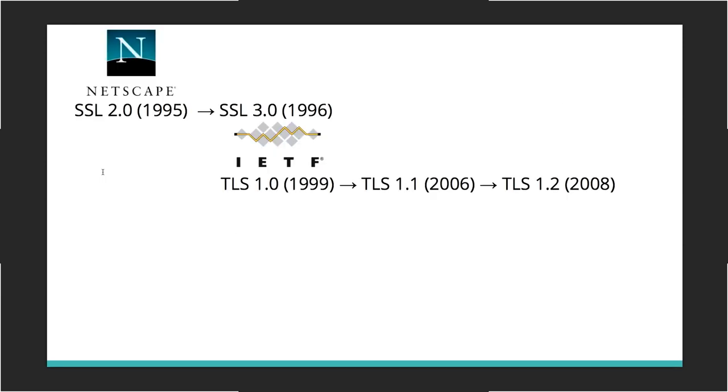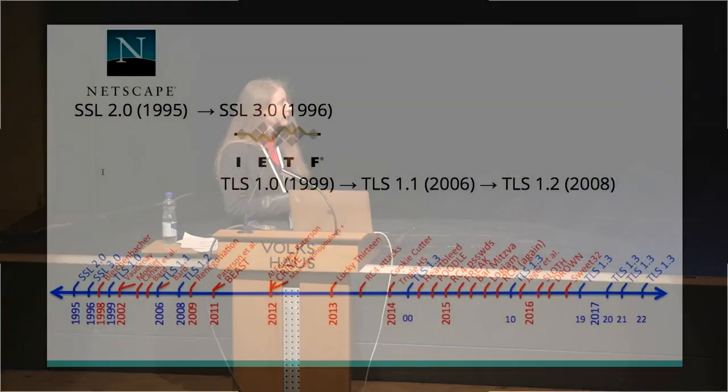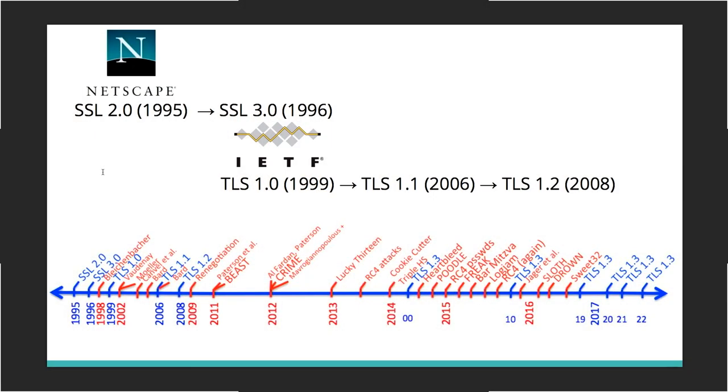TLS started life as the Secure Sockets Layer protocol, SSL, developed by Netscape Communications. SSL version 1 was never publicly released, and in 1999 the IETF standardized a version of SSL called the Transport Layer Security protocol, TLS. Work on TLS 1.3 started in the spring of 2014, basically because of a wave of attacks — and red means attack — so TLS was definitely due an overhaul.